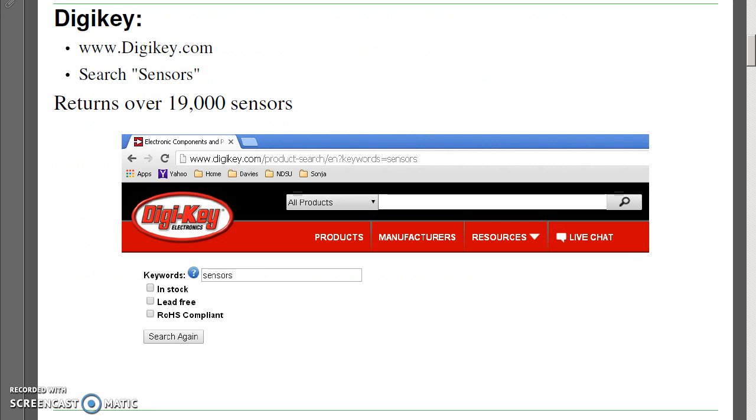Now to start with, Digi-Key is one of our favorite websites in electrical engineering, it's kind of like our toy chest. It has a very friendly website where you can search. If you search for sensors, you'll find over 19,000 different sensors in stock.